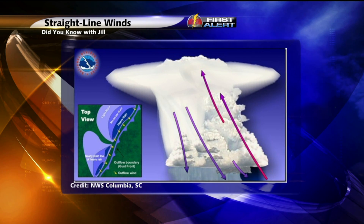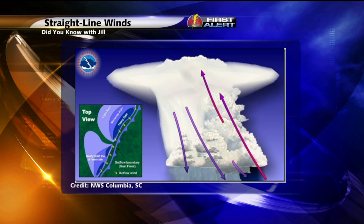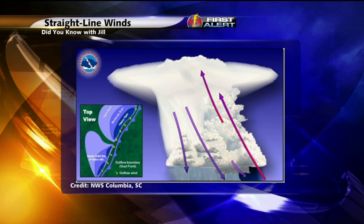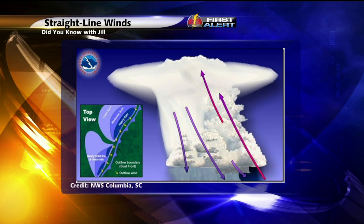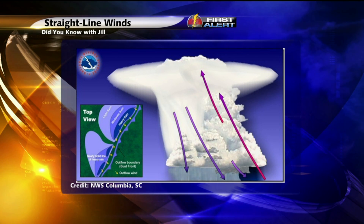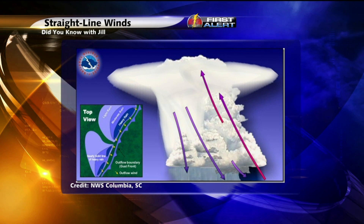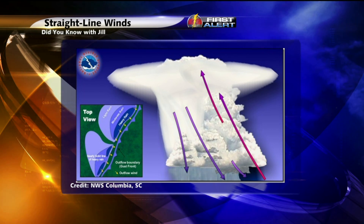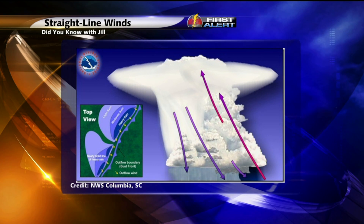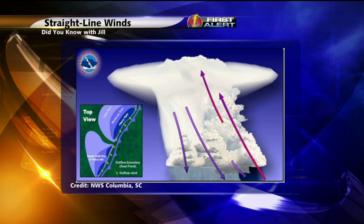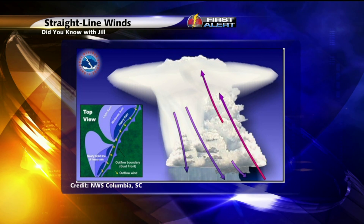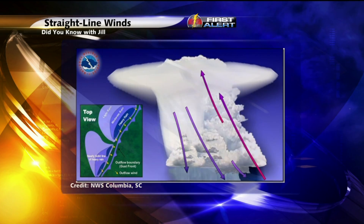This downdraft can often lead to an outflow boundary, which is another line of showers and thunderstorms that develops ahead of that main line that you usually see. This can also be the area where some of the strongest winds occur as these storms are moving over a given area.